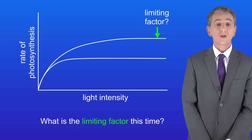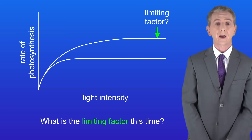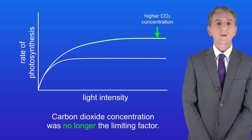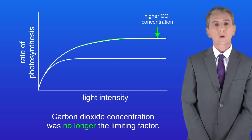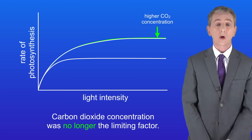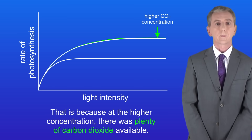So the question is once again: what's the limiting factor this time? If we increase the concentration of carbon dioxide one more time, we get this graph. As you can see, the rate of photosynthesis hasn't changed, so carbon dioxide concentration was no longer the limiting factor in this case — because at the higher concentration, there was already plenty of carbon dioxide available.